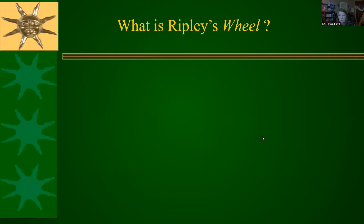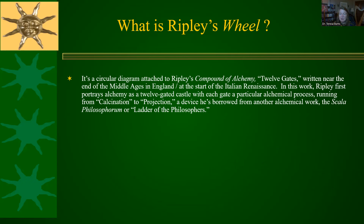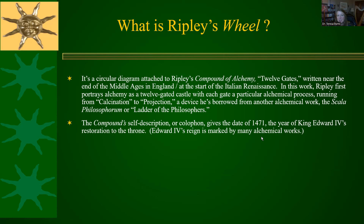So let's look at what Ripley's Wheel is. As noted, it's that circular diagram, but if you look at it as a key to the whole of the Compound of Alchemy — which is what Jennifer Rampling does — it makes more sense, because the dominant metaphor of that whole work doesn't really relate to the verses inside. Ripley's Compound of Alchemy is not a set of scientific instructions; it's verses about the process of alchemical transformation. There's a beautiful governing metaphor of a huge castle with 12 gates — think 12 signs of the zodiac, 12 months of the year — and he has 12 stages of alchemical transformation running from calcination to projection. The self-description of the compound gives a date of 1471, the year Edward IV is restored to the throne.